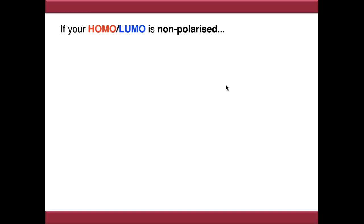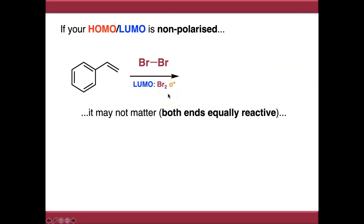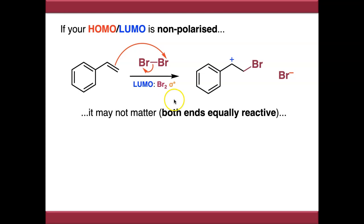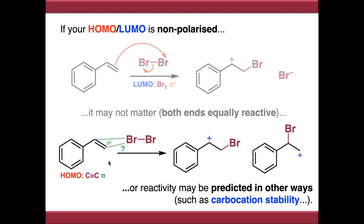We now know how to predict reactivity when the HOMO or LUMO is polarized. When it's non-polarized, it often doesn't matter — for example, in dibromine the sigma star LUMO is symmetric and both ends are equivalent, so attacking either side gives the same product. However, when it does matter — such as predicting which of two carbon atoms forms a bond to bromine — carbocation stability can guide the prediction. The more stable carbocation intermediate determines the regiochemical outcome, which is covered in a separate video.